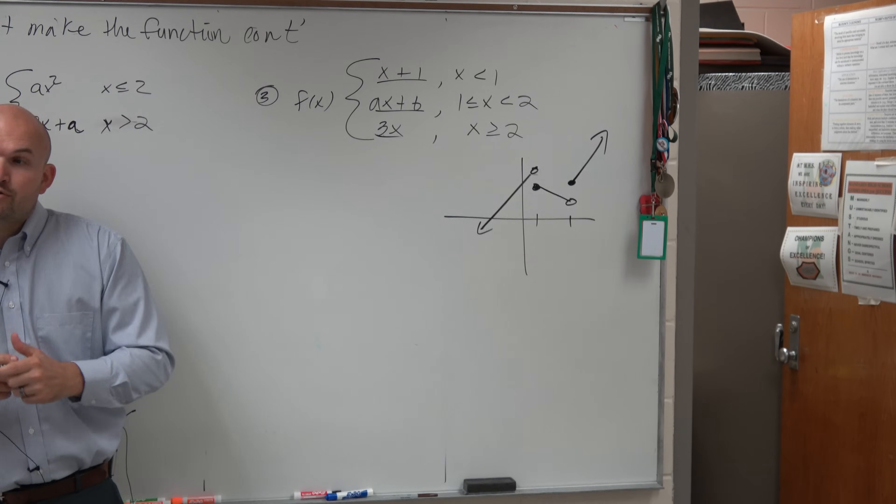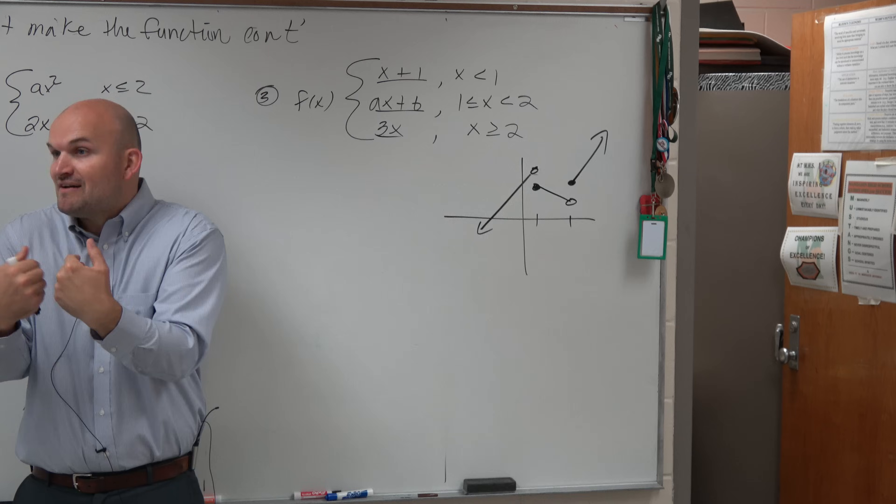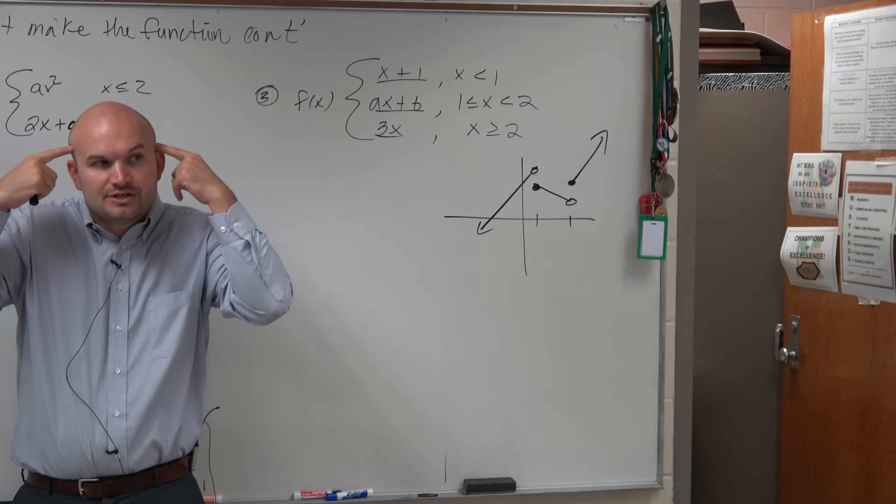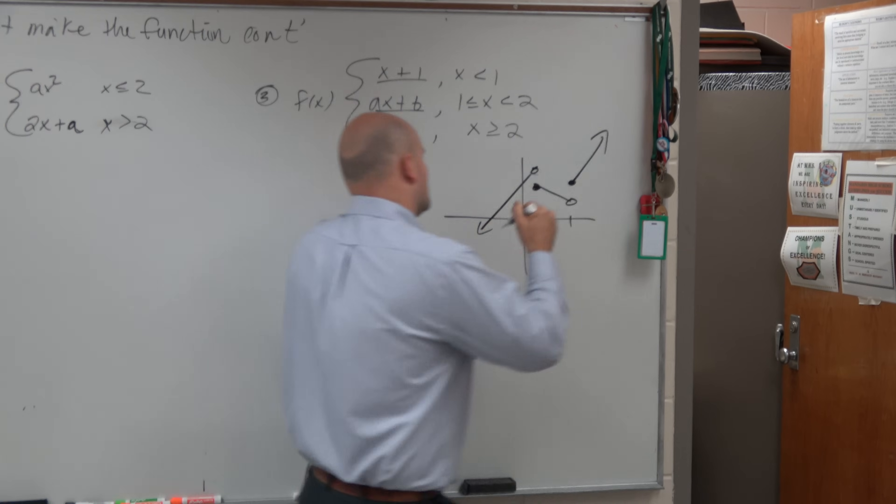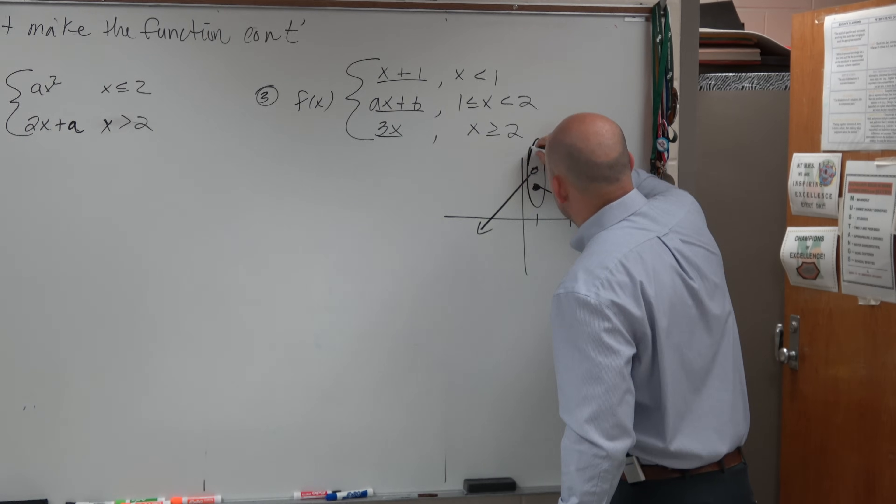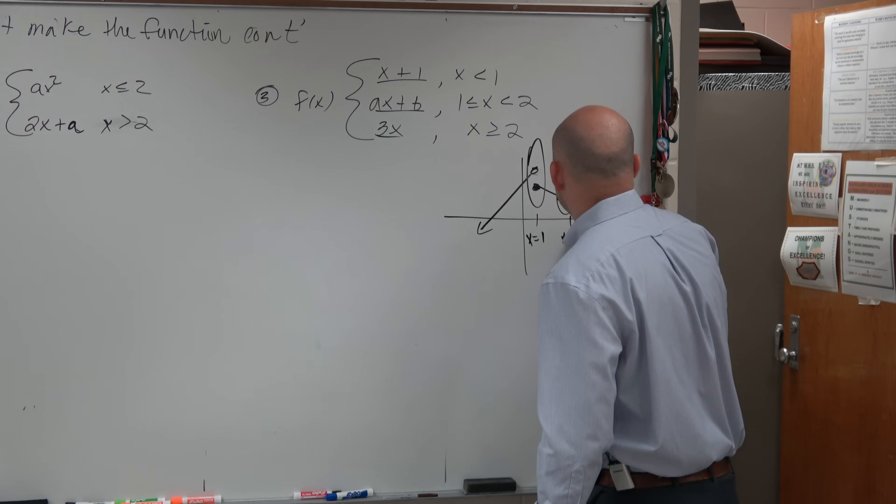So basically what we're trying to do is we're trying to connect these three graphs so the graph is continuous. That's what we're trying to do. We're trying to find the values that are going to make these connections. So basically there's two values that we want to have connected at x equals 1 and at x equals 2.